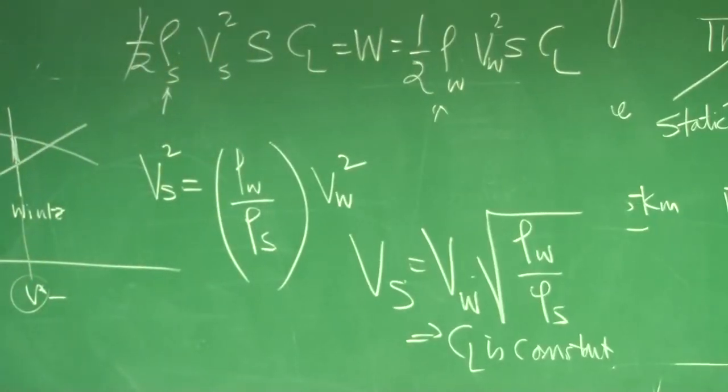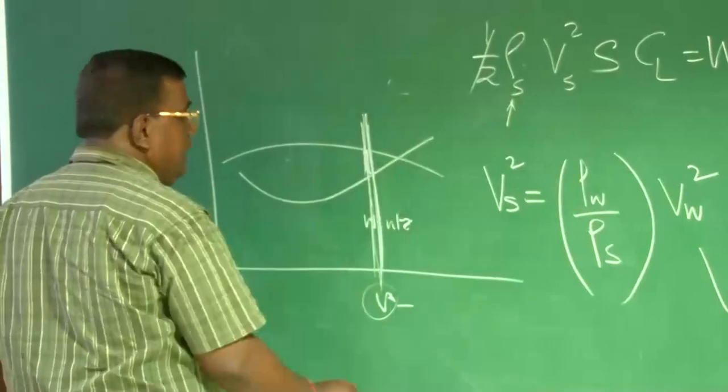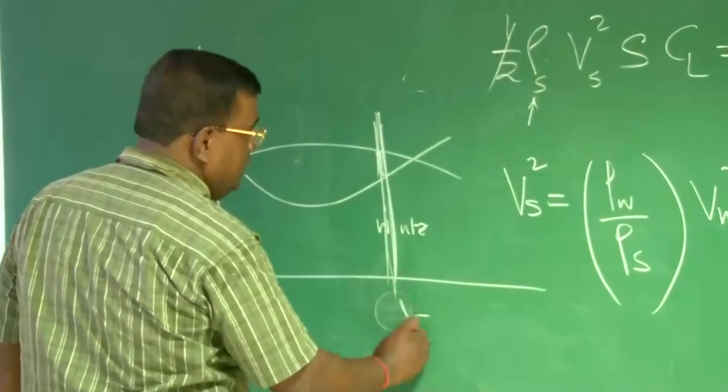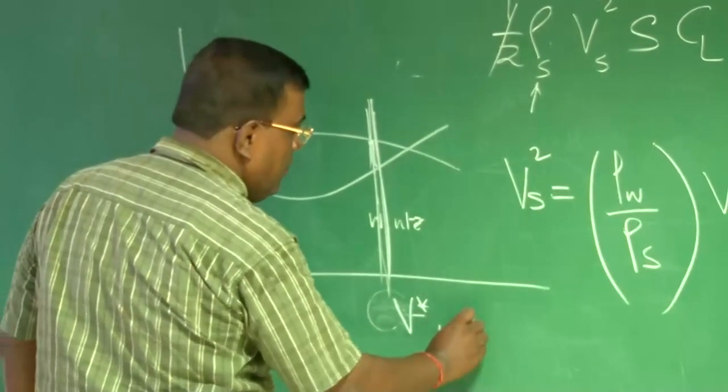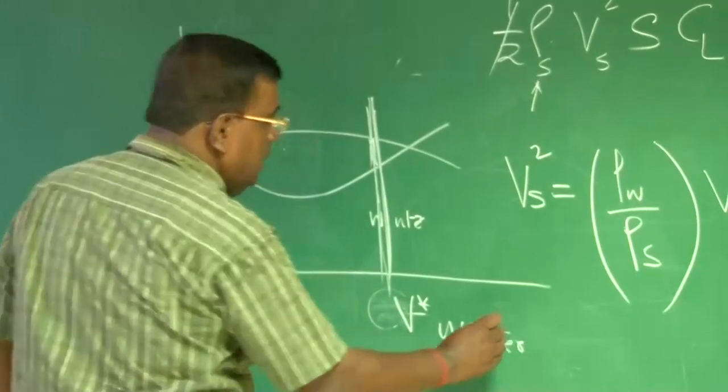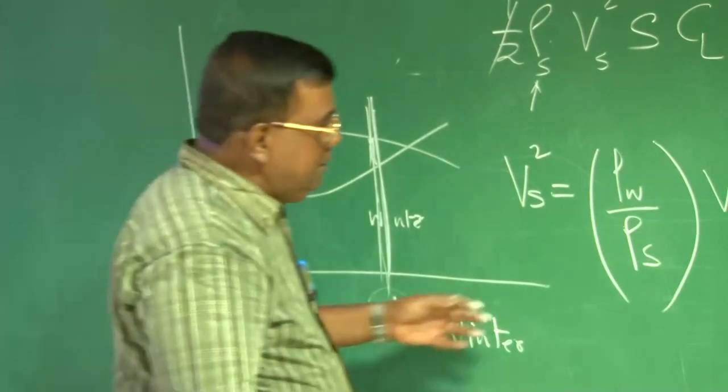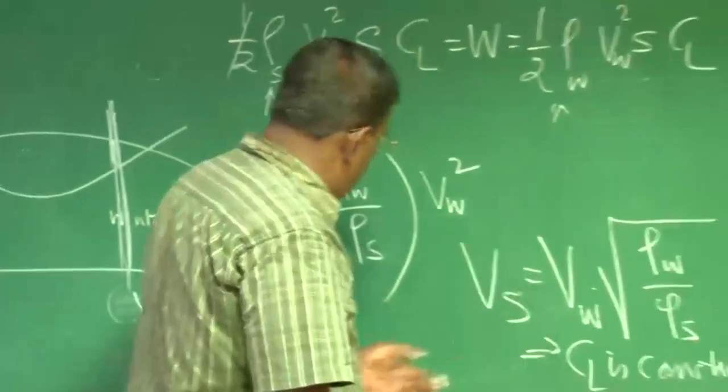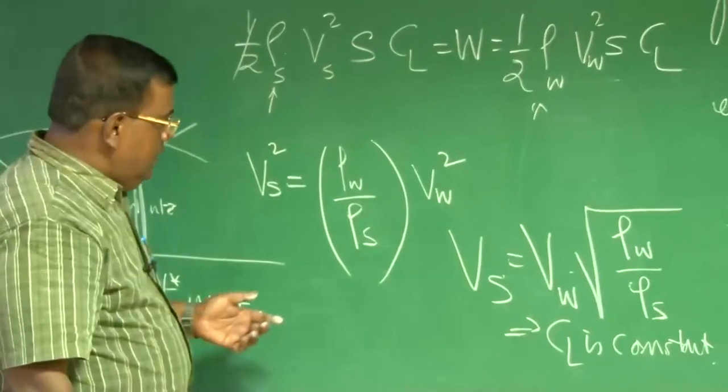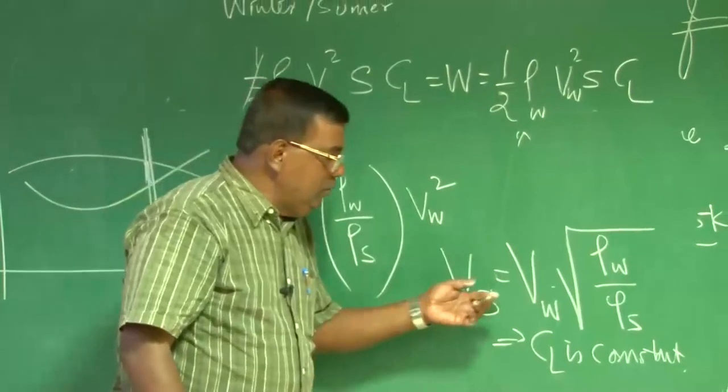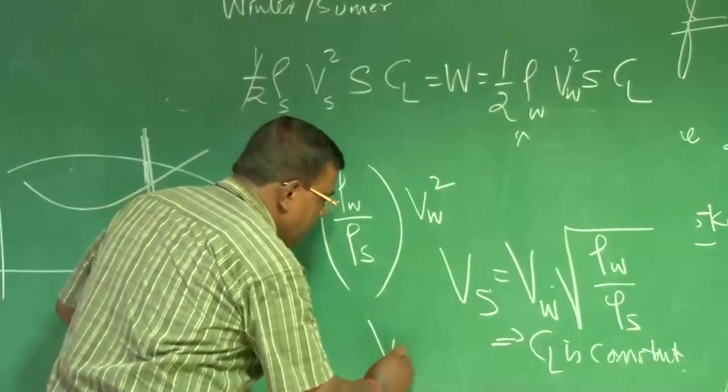This is important. Now suppose, because of some constraints, it means already you are flying here at V star in winter. And now you want to duplicate this in summer. The summer means, now this V star which was V winter, in summer it will be V summer which will be more than V winter.